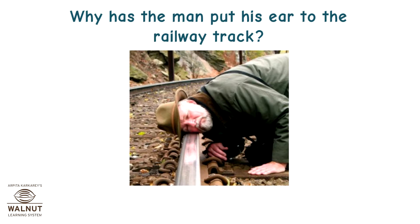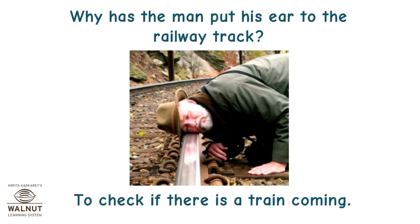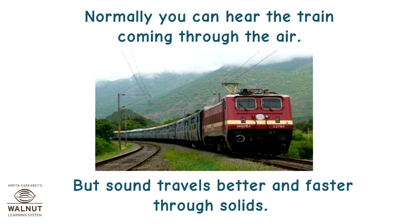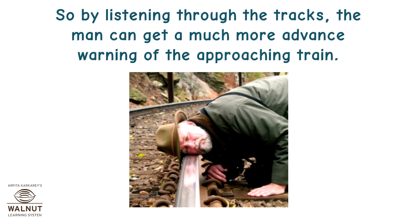Why has the man put his ear to the railway track? To check if there is a train coming. Normally, you can hear the train coming through the air. But sound travels better and faster through solids. So by listening through the tracks, the man can get a much more advanced warning of the approaching train.